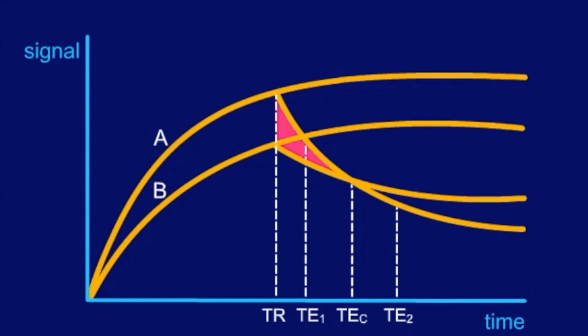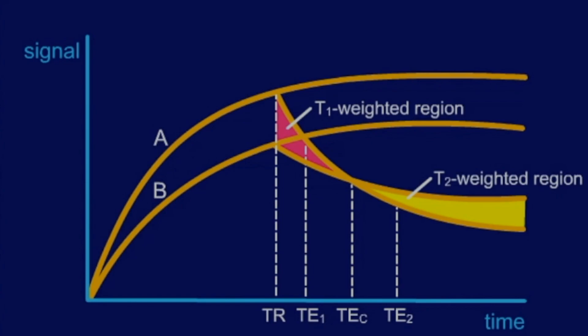Before this crossing point, which you do not know looking at an image normally, the relative signal intensities are still governed by differences in T1. The tissue with the shorter T1, or the higher proton density, if we have a long TR, still has the higher signal intensity. Only with longer TEs does the T2 weighting come up.